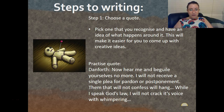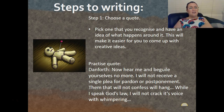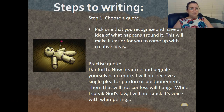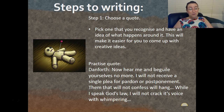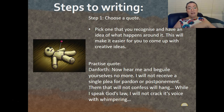So, steps to writing. Step one: choose your quote — pick the one you recognise and have an idea about what happens around it, which makes it easier to come up with creative ideas. Remember, you're going to have 72 hours with the prompt, so you've got loads of time to go back to the scene, re-read it, and make sure you understand it.